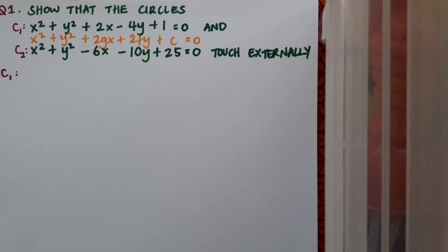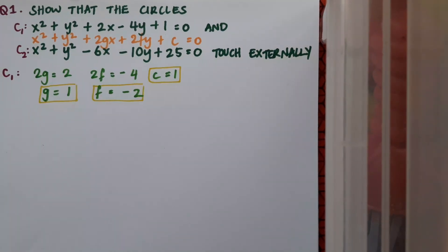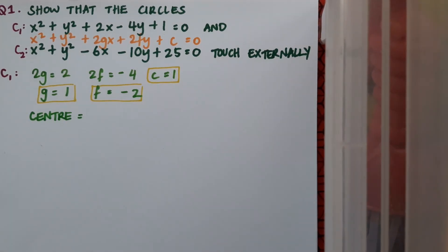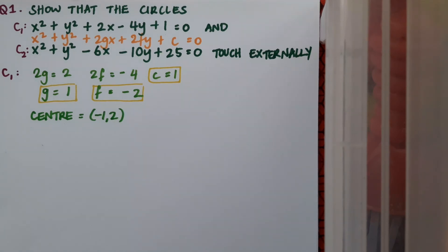So for c1 I'll pick out my g, f and c and I'll use these to get centre and radius. It's a good plan to have your log tables open next to you at all times for these questions. Centre is minus 1, 2 and radius works out as 2.